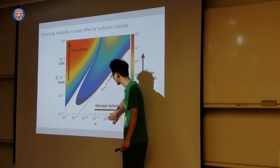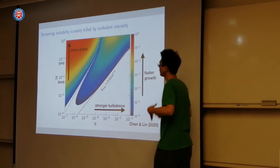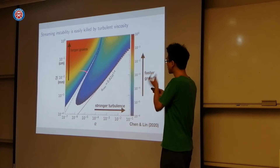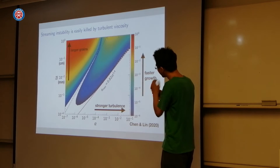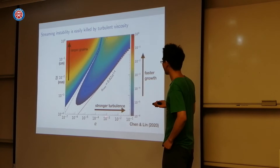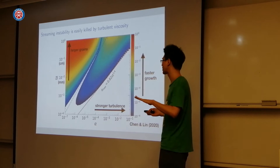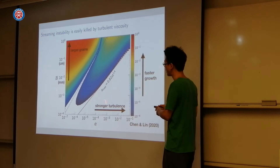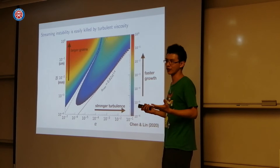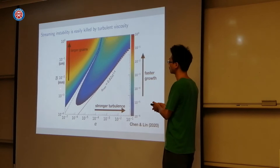What he found was that the streaming instability is very sensitive to turbulence. Starting from millimetre-sized particles, for an alpha value of 10⁻³, I already get a very small growth rate — the instability is suppressed significantly. For even smaller-sized particles, the instability is essentially stabilized and quenched. So it would be very difficult to form planetesimals with small grains in typical protoplanetary disk turbulence levels.